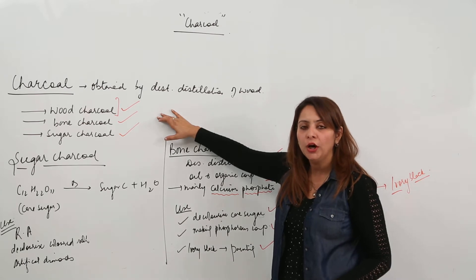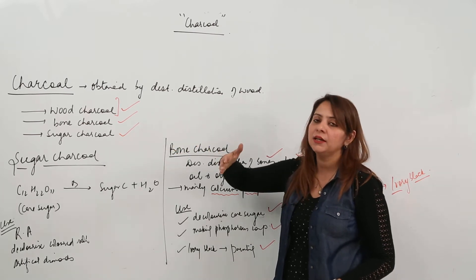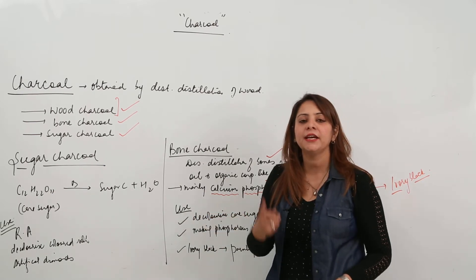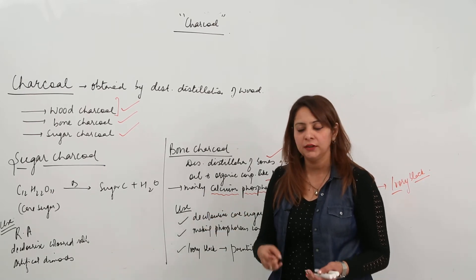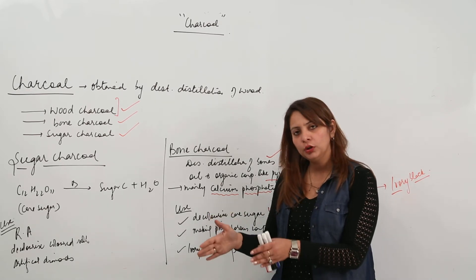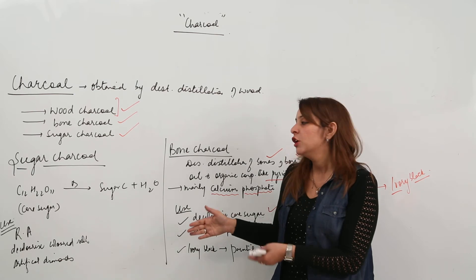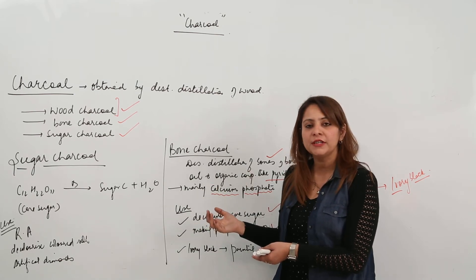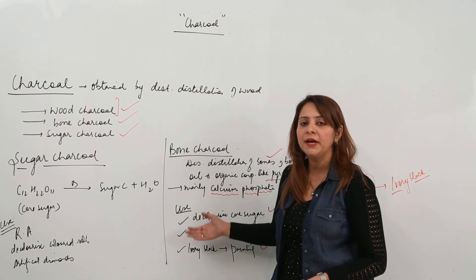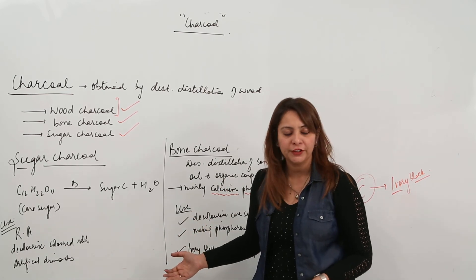bones, and organic compounds like pyridine. So this is all about charcoal, that is the second amorphous form of carbon. So I think you got it. You know about coal also now. You know about charcoal also. So there are two more forms which we are going to study, that is gas carbon and lamp soot. So this is all of the second form and we are starting with the third amorphous form of carbon.